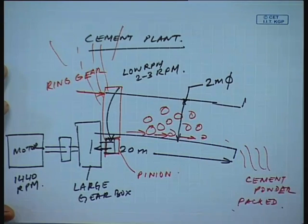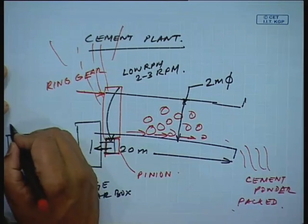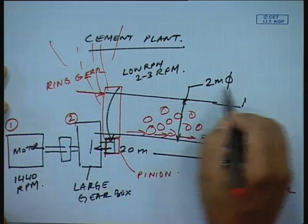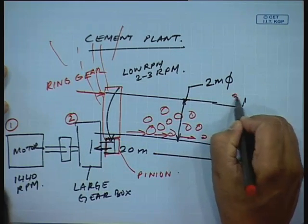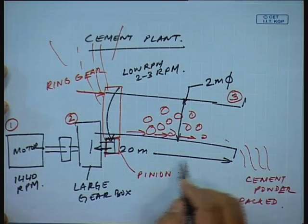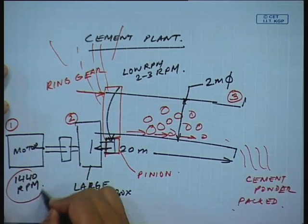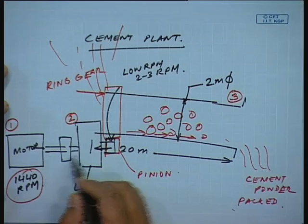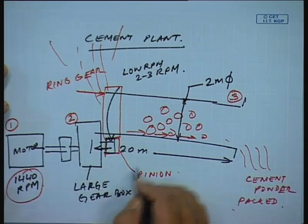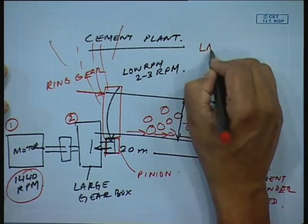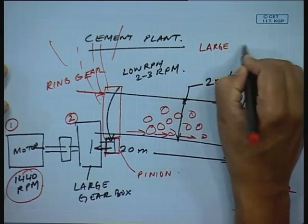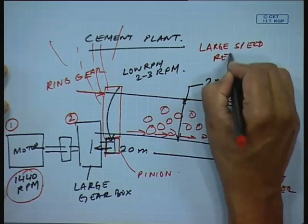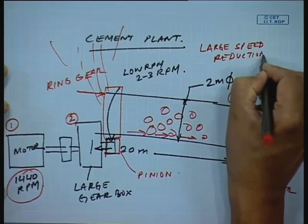The most important elements are the motor, the gearbox, and the mill. Standard motors run at 1440 RPM and we have to bring about a large speed reduction from about 1440 RPM down to 2 RPM. So imagine a plant where you are dependent on daily production of cement powder from raw materials like limestone and gypsum.